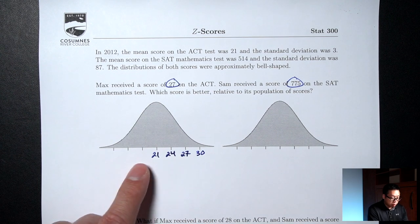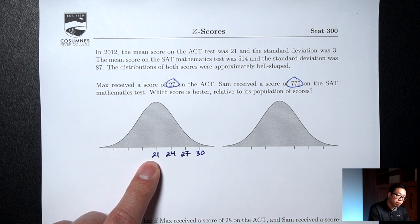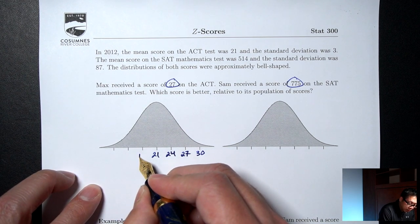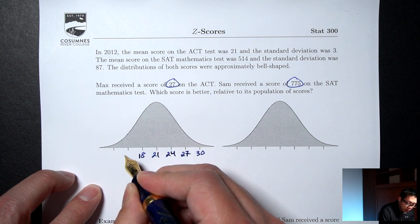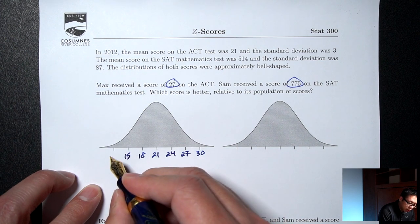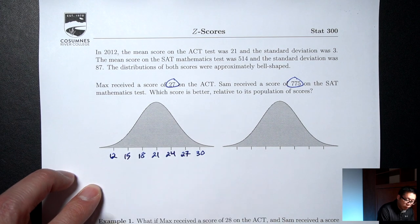Going the other direction, 21 minus the standard deviation: 21 minus 3 is 18, minus 3 again is 15, minus 3 one last time is 12.